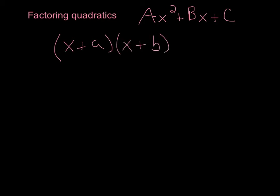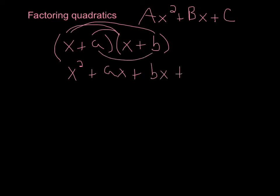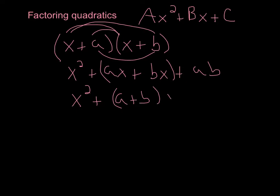Notice the a and b here are not the same — we've got capital A's and little a's. To multiply this, we just distribute using our FOIL property. So we get x² + ax + bx + ab. If we simplify, we have x² and, grouping those middle terms with the associative property, we can pull an x out and get (a + b)x + ab.